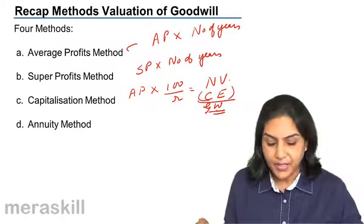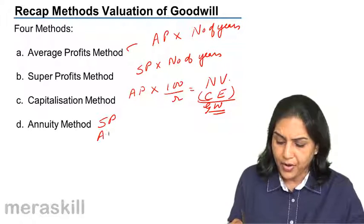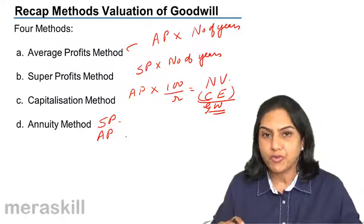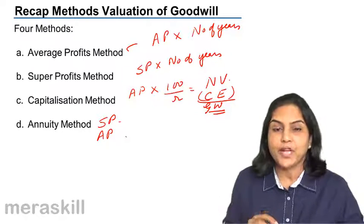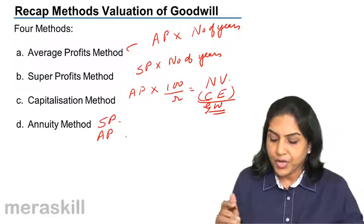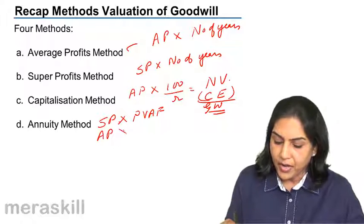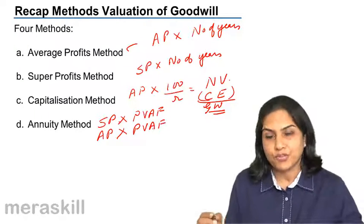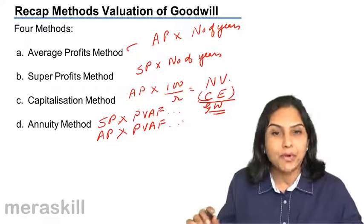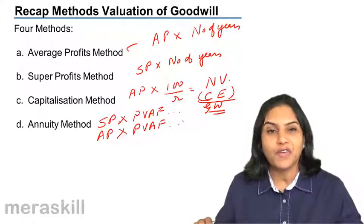Next, we did the annuity method. Under the annuity method, it could be taken for super profit or actual profit. Since profits — super profits or average profits — are future cash flows, we find out the present value of these future cash flows, which should represent goodwill. So, under the annuity method, it is super profit multiplied by the present value annuity factor, or average profit multiplied by the present value annuity factor for n number of years, depending on whatever has been agreed upon. These were the methods of valuation of goodwill of a partnership firm.